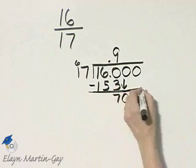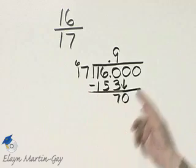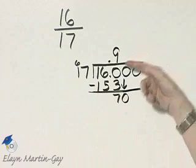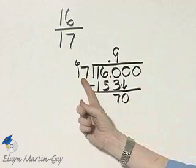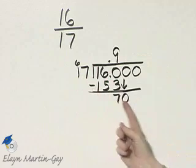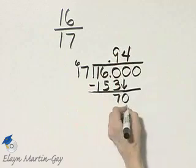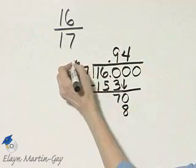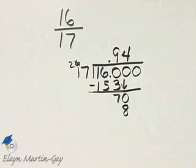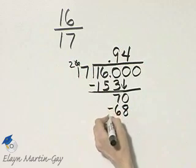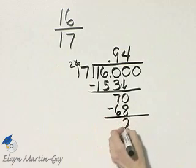Bring down the 0. How many times does 17 go into 70? Well, I knew 2 times 17 is 34, so I'm going to guess 4 times. 4 times 7 is 28. Carry the 2. 4 times 1 is 4, plus 2 is 6. And then I'll have a remainder of 2.